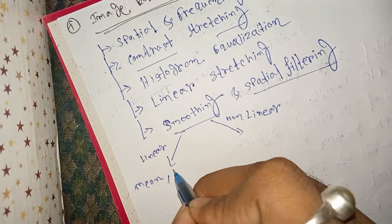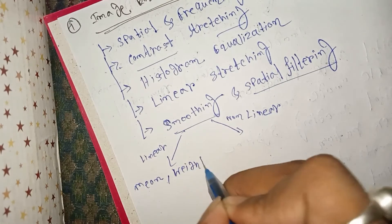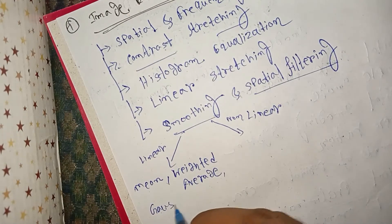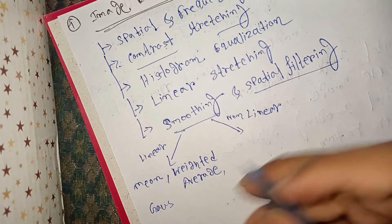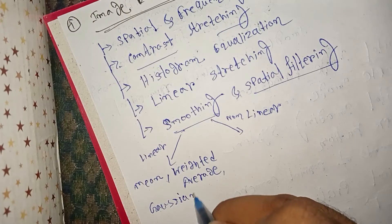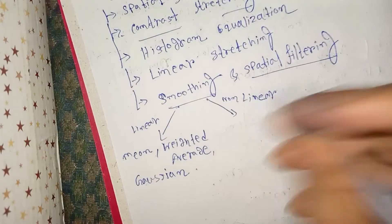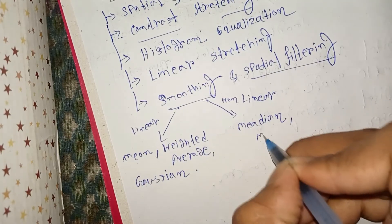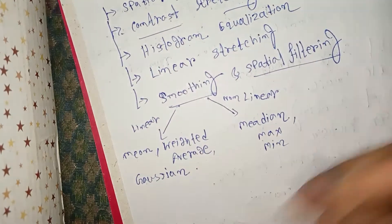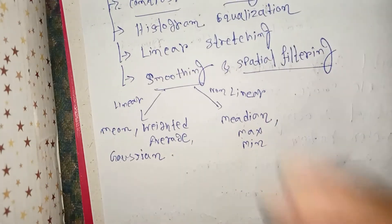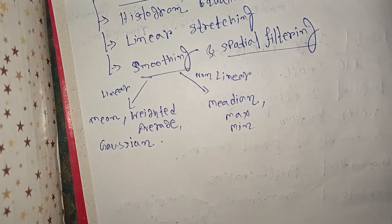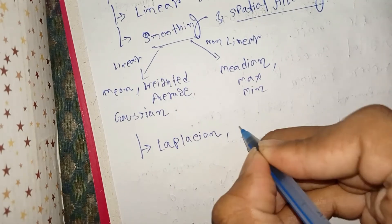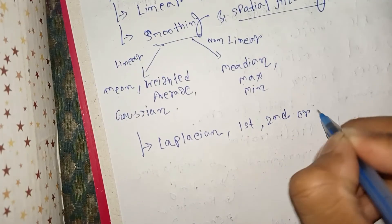Various types of filter questions can be asked, including mean filter, weighted average filter, and average filter for linear filters. For non-linear filters: median, max, and mean filters. We will discuss these numericals in our next videos. Another important filter is the Laplacian filter, and also first and second order derivative filters.